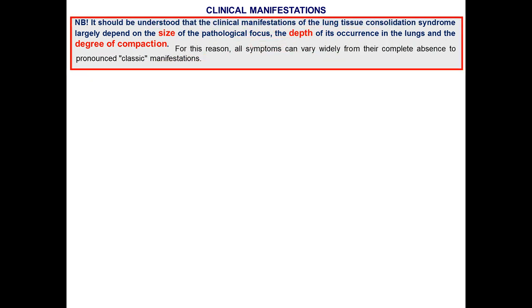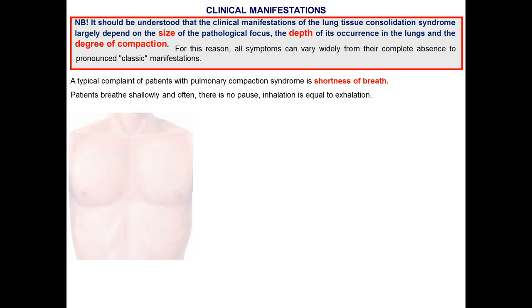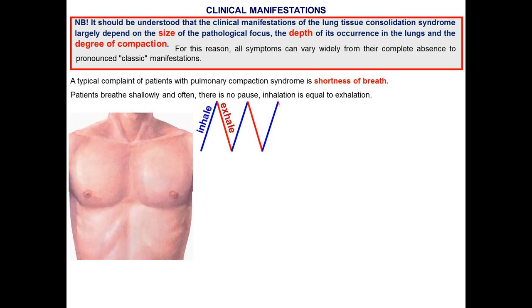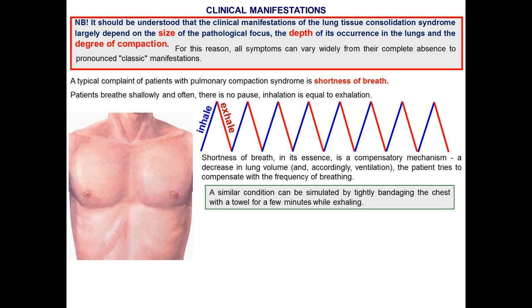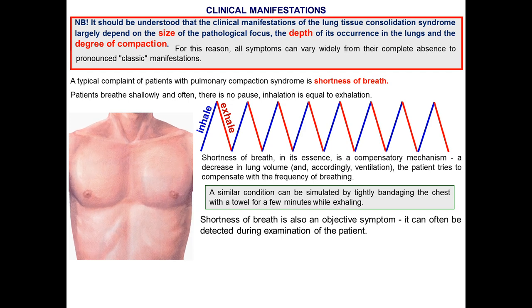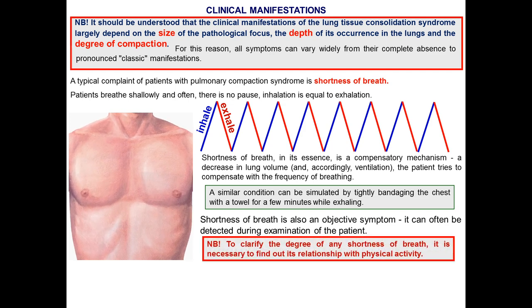The clinical manifestation of lung tissue consolidation syndrome largely depends on the size of the pathological focus, the depth of its occurrence in the lung, and the degree of compaction. For this reason all symptoms can vary widely from complete absence to pronounced classic manifestation. A typical complaint of the patient with pulmonary compaction syndrome is shortness of breath. The patient breathes shallowly and frequently, with no pause; inhalation equals exhalation. Shortness of breath is a compensatory mechanism: as lung volume and ventilation decrease, the patient tries to compensate with increased respiratory frequency.